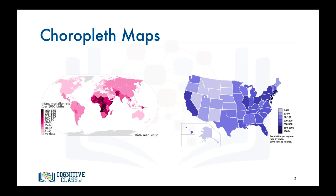So what is a choropleth map? A choropleth map is a thematic map in which areas are shaded or patterned in proportion to the measurement of the statistical variable being displayed on the map, such as population density or per capita income. The higher the measurement, the darker the color.